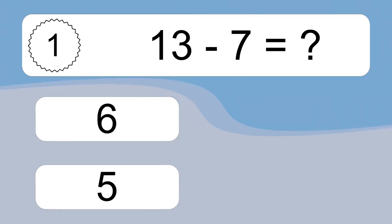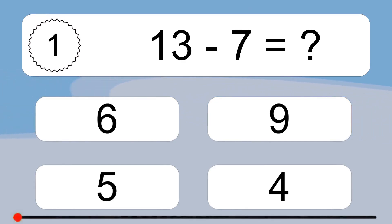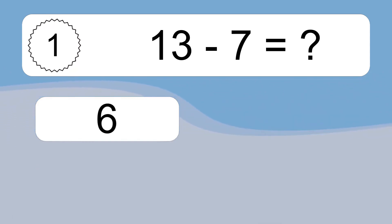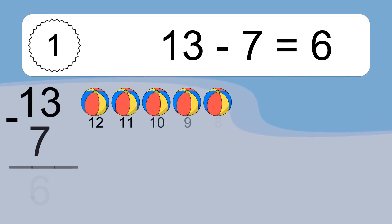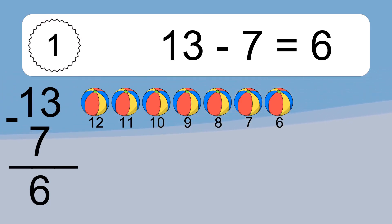13 minus 7 equals what? 13 minus 7 equals 6. Let's count it: 12, 11, 10, 9, 8, 7, 6.